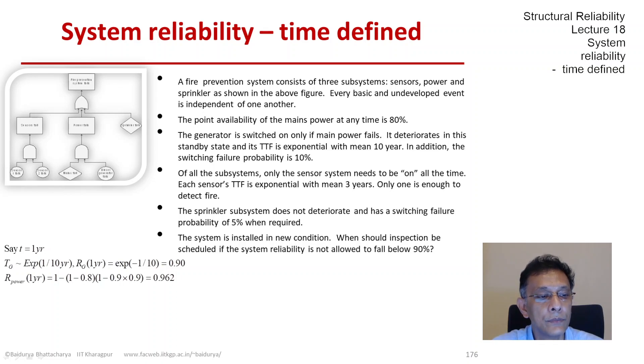The generator has an exponential distribution, so its reliability can be found to be roughly 0.9. The power system has a reliability of 0.96.